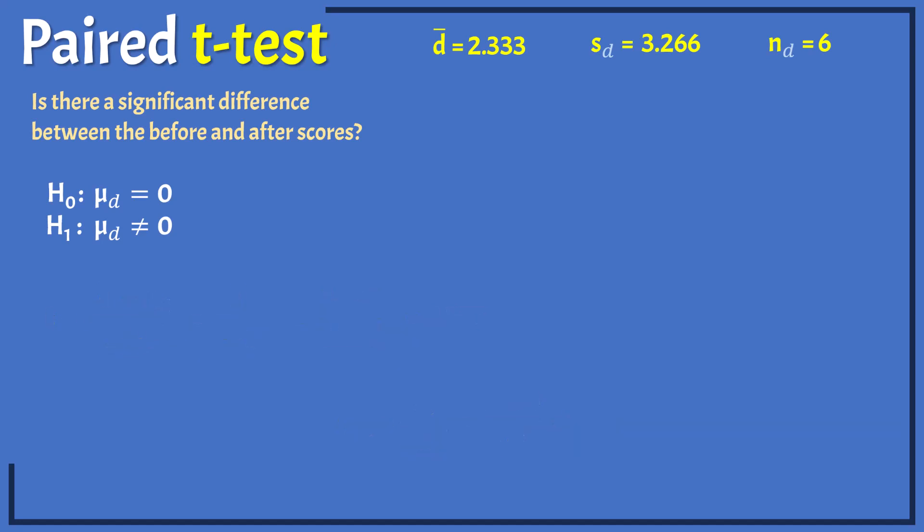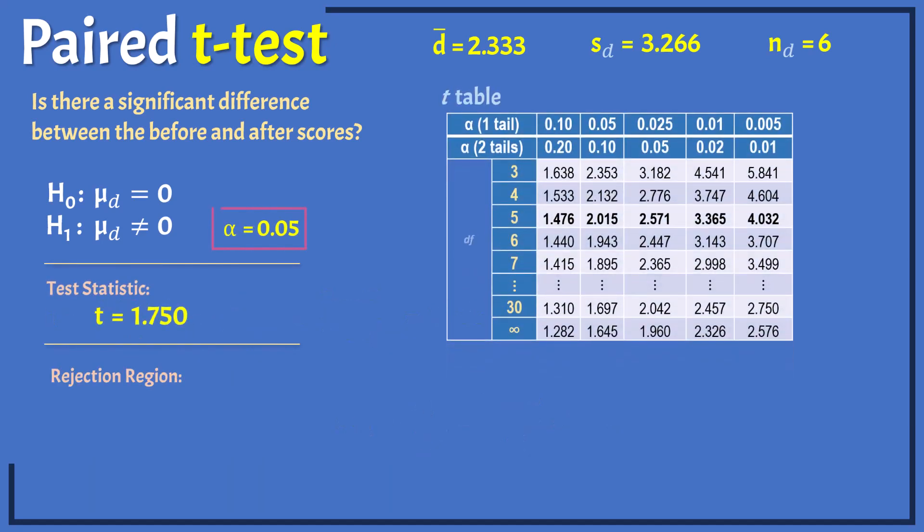Now suppose we're testing at the significance level alpha of 0.05. We can find the critical or rejection region using software or from the table. The degrees of freedom for the test is nd minus 1, which gives 5. For alpha equals 0.05 in two tails, or 0.025 in one tail, the critical value is 2.571.